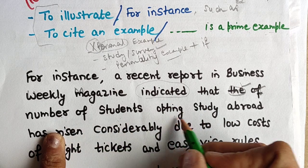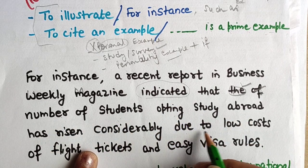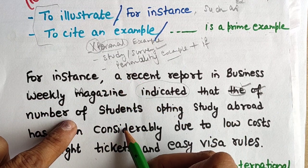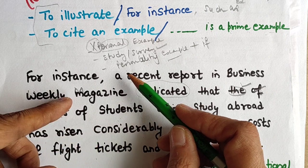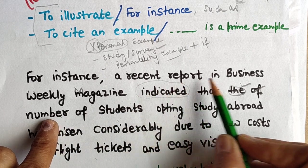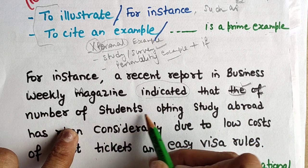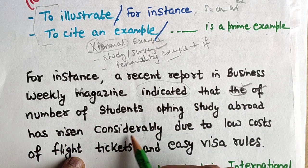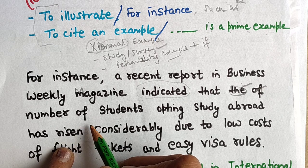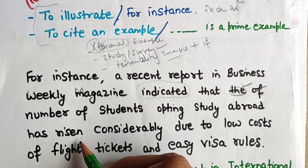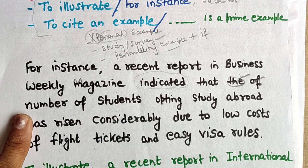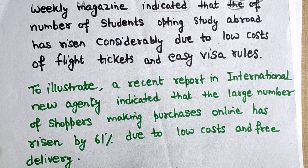The full example reads: 'For instance, a recent report in Business Weekly Magazine indicated that the number of students opting to study abroad has risen considerably due to low cost of flight tickets and easy visa rules.' Some students include a percentage figure to show data — you can use it, but do not use too many figures in writing task 2.